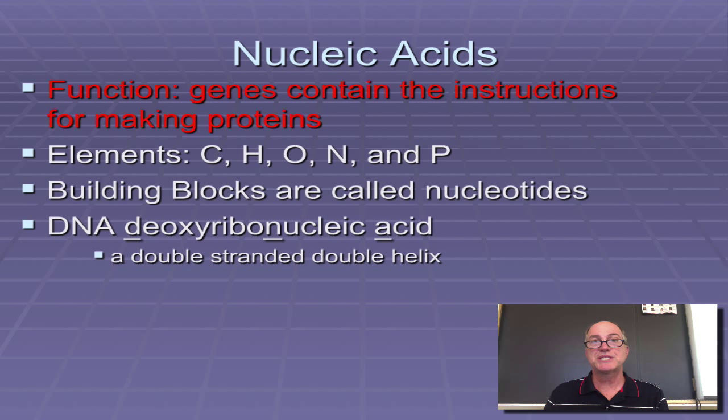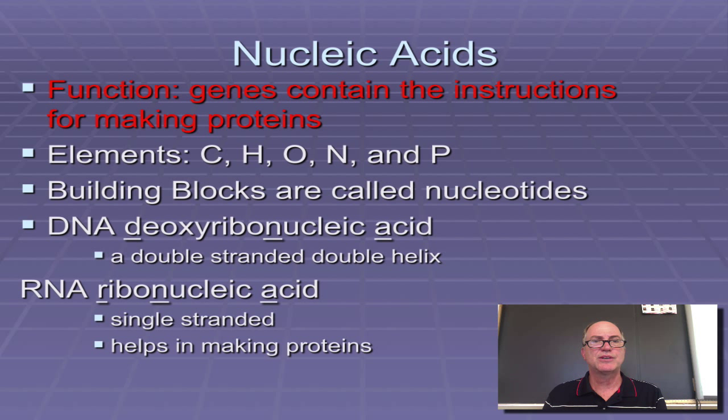The two types of nucleic acids are deoxyribonucleic acid, DNA, which is a double-stranded, double-spiral or helix molecule. And ribonucleic acid, which is a single-stranded molecule. And that helps in the process of the DNA coding for the production of proteins.